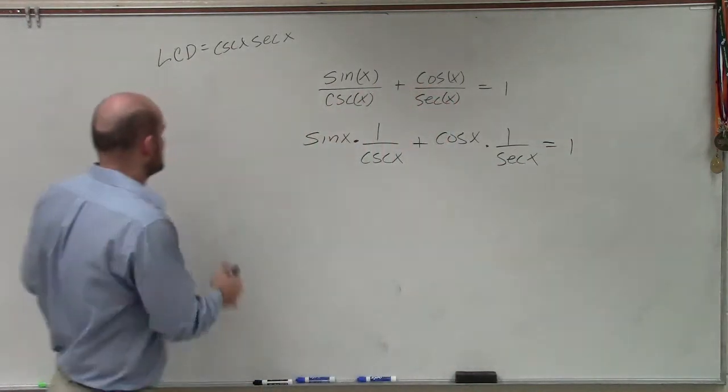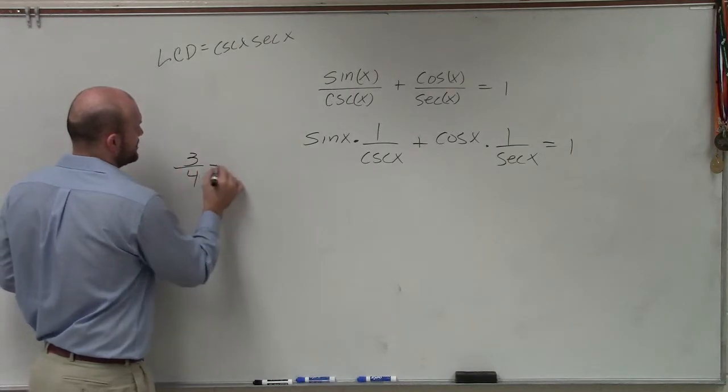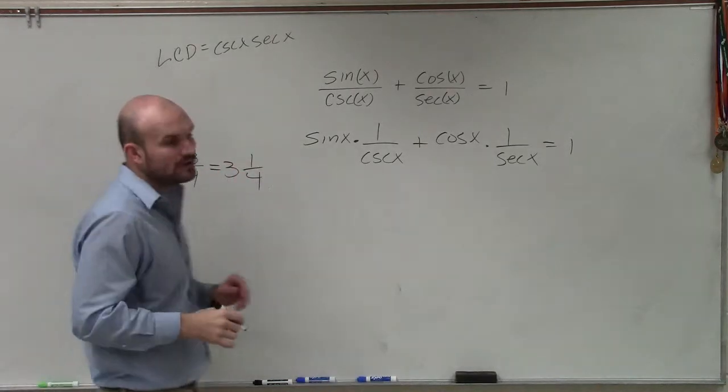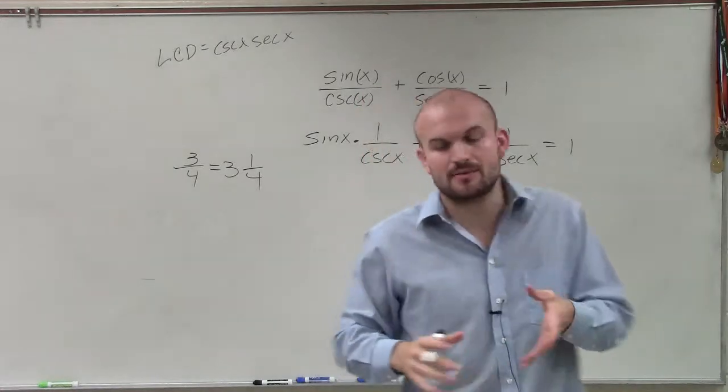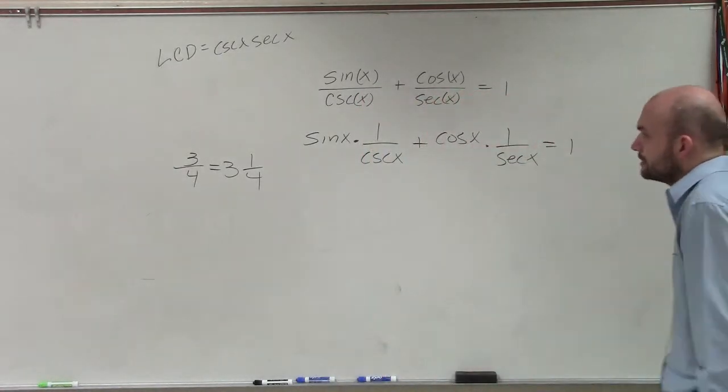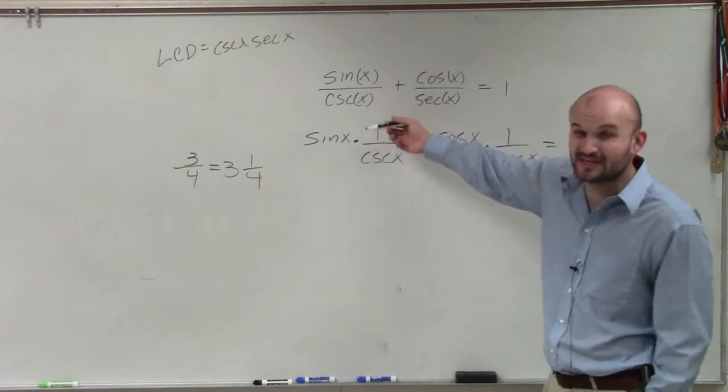And the reason why I do this, if I have 3/4, we know that's the same thing as 3 times 1/4, right? You can take that number in front and rewrite it up in your numerator. So I just broke these apart. And the reason why I do this is because now, applying my reciprocal identities...